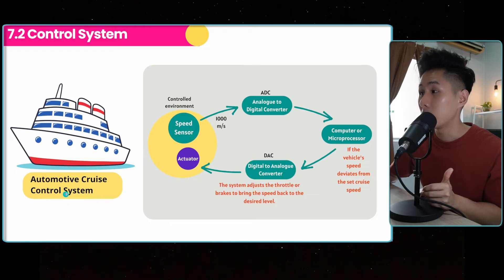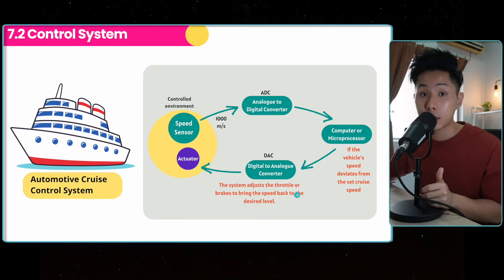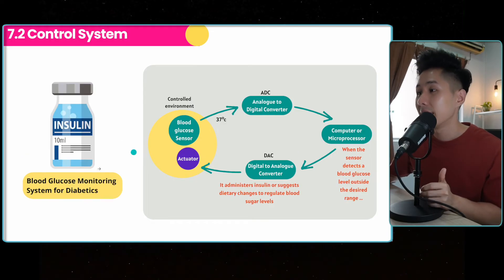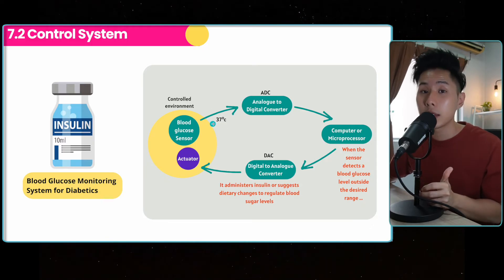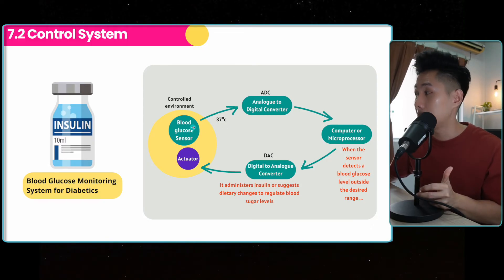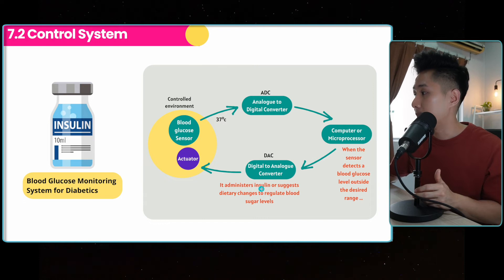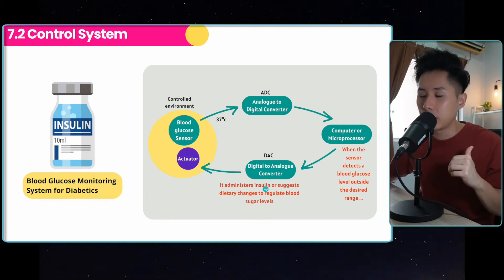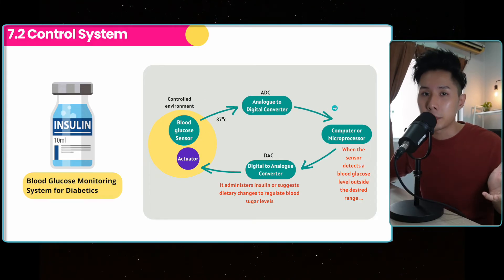The next one is the automotive cruise control system. They measure the speed. If it deviates from the set cruise speed, the system adjusts the throttle or brake to bring the speed back to the desired level. Last example, blood glucose monitoring system. Instead of just measuring the temperature, they also measure the glucose level. And if the glucose level is outside the desired range, it can get too high, then this system will administer insulin, which is a medicine to lower down your blood glucose level. So this is just another example for a control system.